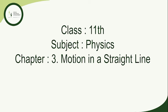It is convenient to choose a rectangular coordinate system consisting of three mutually perpendicular axes labeled x, y, and z. The point of intersection of these axes is the origin and serves as the reference point. The coordinates x, y, and z describe the position of the object with respect to this coordinate system. To measure time we position a clock in this system. This coordinate system along with a clock constitutes a frame of reference. If one or more coordinates of an object change with time, the object is in motion; otherwise it is at rest.